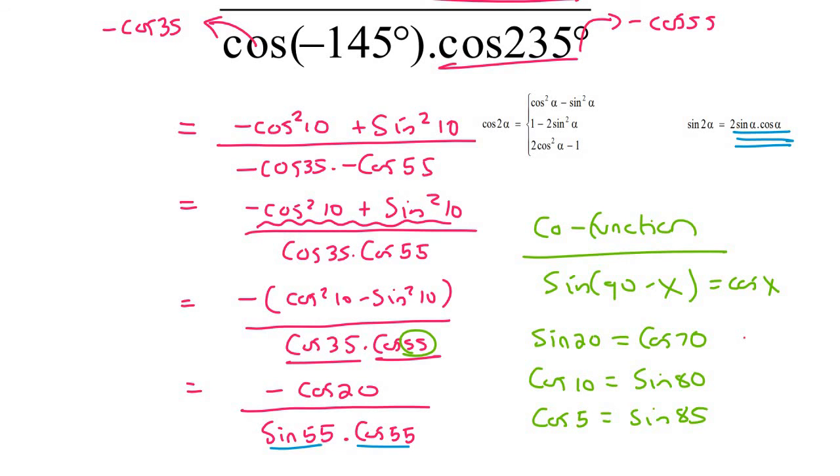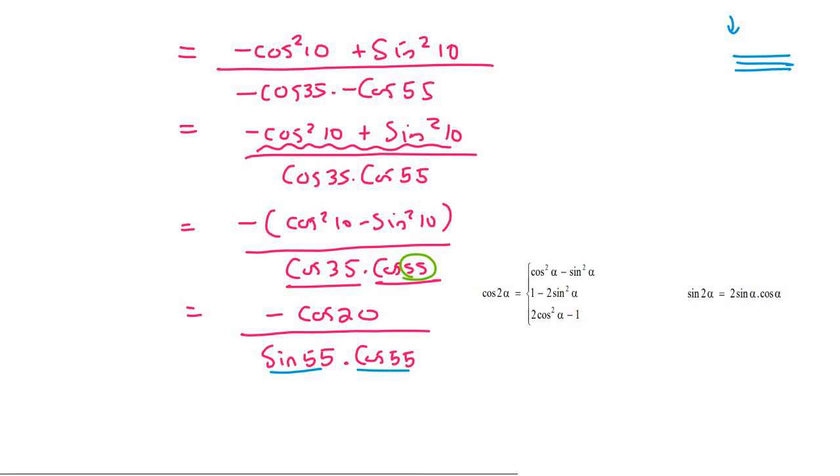Yes, we don't have the 2 there, but that's okay. Because I can easily put a 2 there. All I do is I multiply the top and the bottom by 2. We know that I'm allowed to do that, or we're allowed to do that, because when you multiply top and bottom, then you're technically not really changing anything.